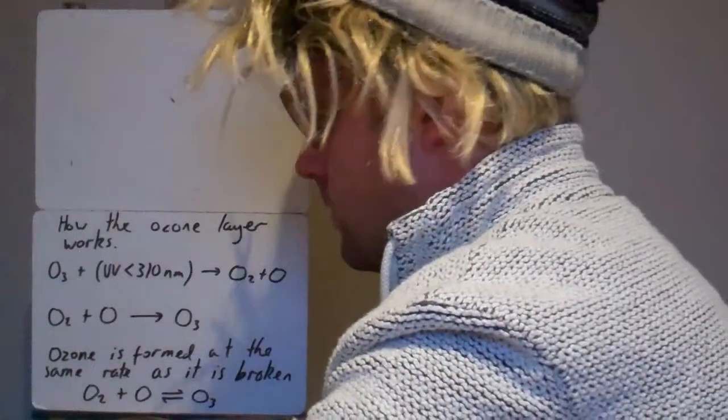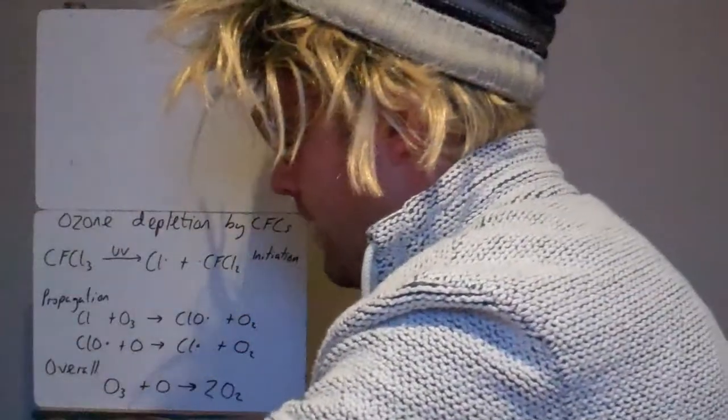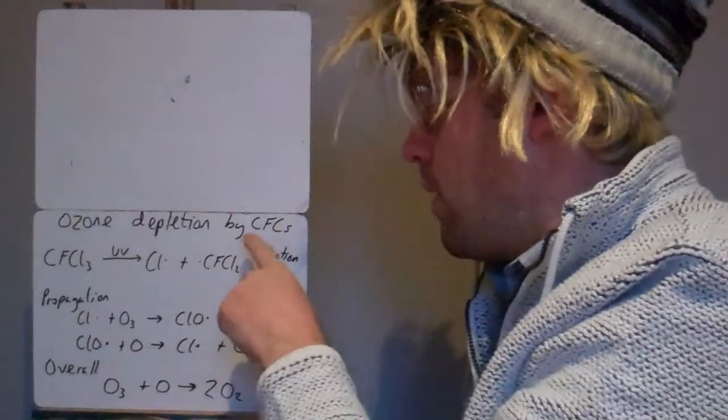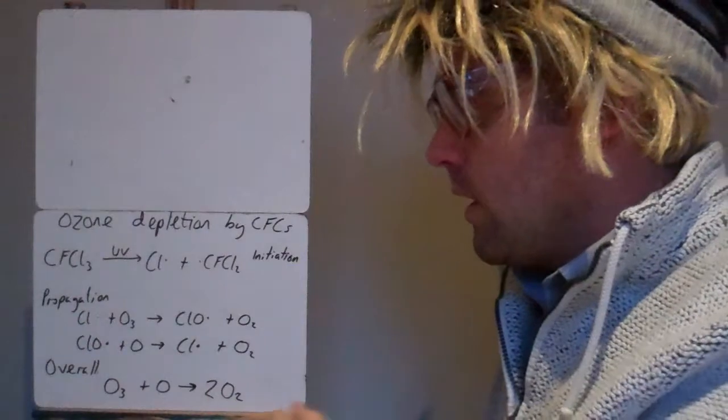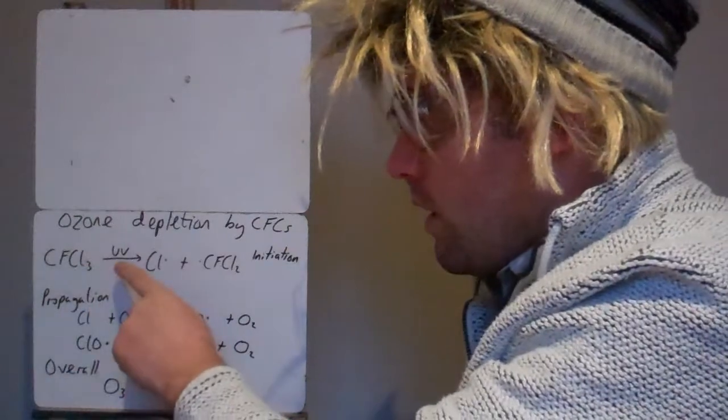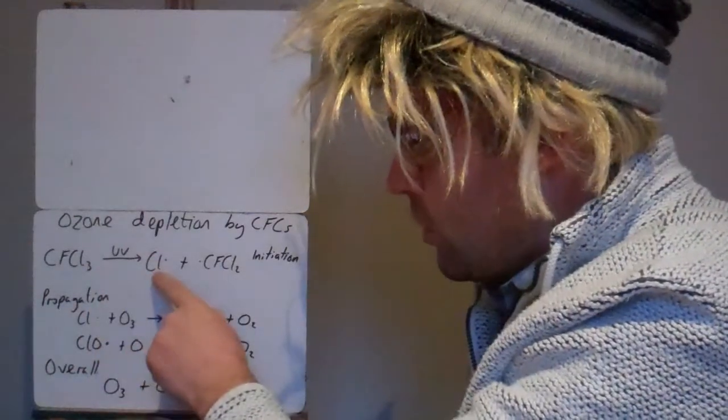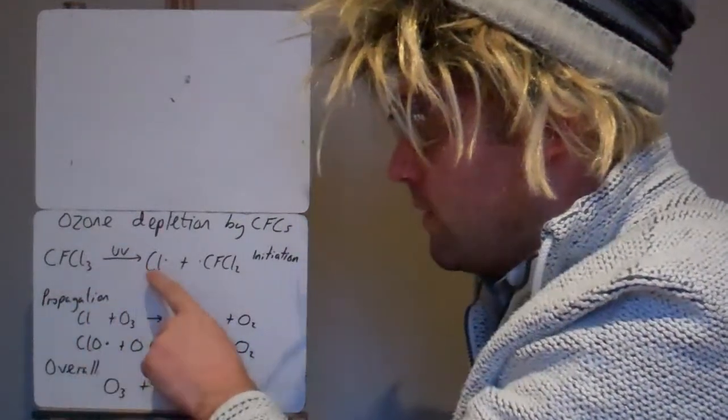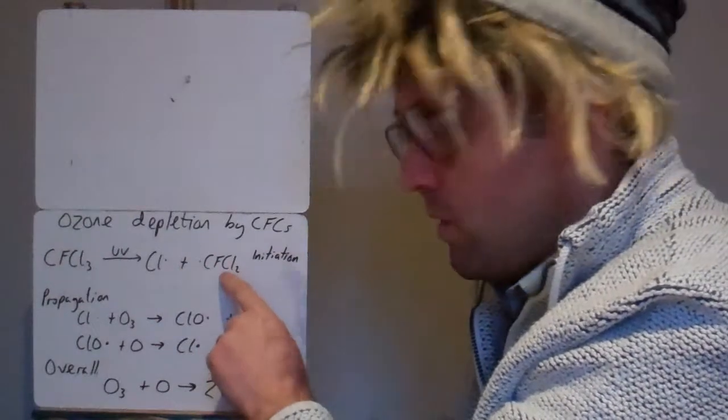So what problems do we have then? There's ozone depletion going on by chlorofluorocarbons, CFCs. So here's an example here. This chlorofluorocarbon, it goes through an initiation step and that produces a chlorine free radical. So the UV has split up this molecule to form a chlorine free radical and the rest of the molecule is there.